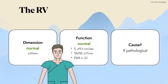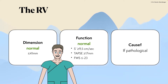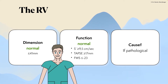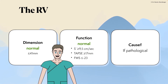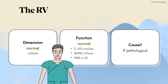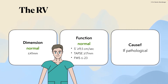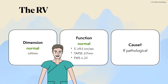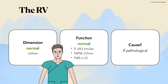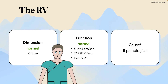What are the normal values of the right ventricle? The dimension is normal when the basal diameter is below or equal to 41 millimeters, which is an easy and reproducible measurement. Function is normal when the TAPSE is above or equal to 17 millimeters. The S' — the tissue Doppler measurement on the lateral tricuspid annulus — is normal if above or equal to 9.5 centimeters per second; practically, remember 10 centimeters per second. The right ventricular free wall strain is normal when more negative than minus 23, for example minus 24 or minus 25. If we identify a dilated right ventricle or impaired right ventricular function, we need to identify possible causes.